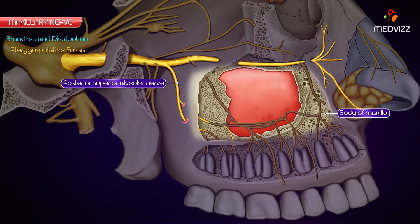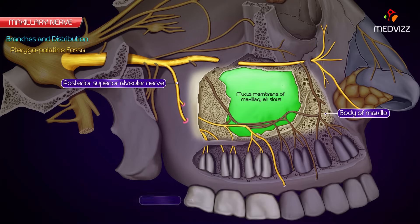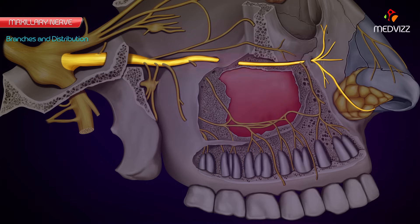The posterior superior alveolar nerve enters one or two foramina on the posterior surface of the body of the maxilla and supplies the mucous membrane of the maxillary air sinus. It then breaks up to form the superior dental plexus, which supplies the molar teeth and the adjoining part of the gum.